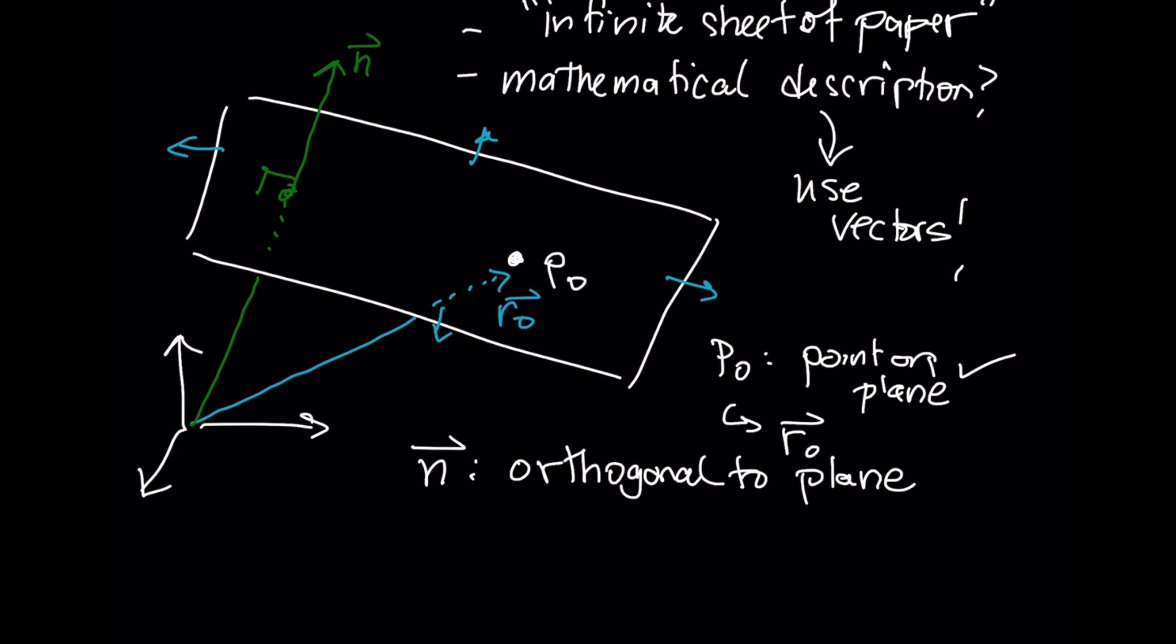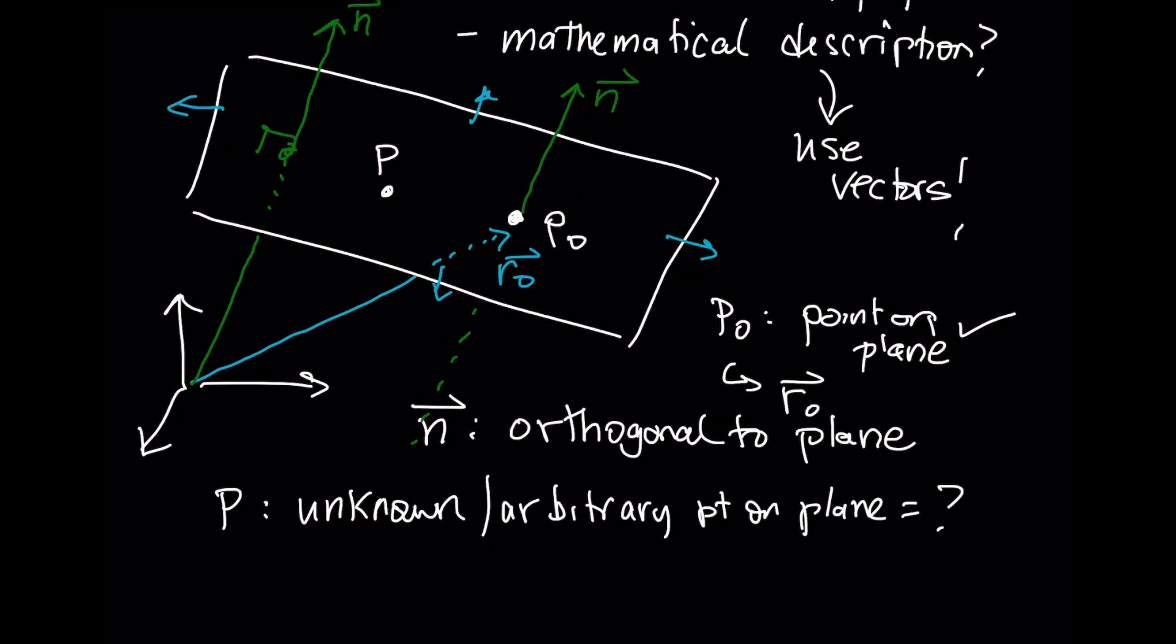I could slide the whole thing over so that it begins at this area like that. P is going to be an unknown or an arbitrary point on the plane. And this is going to have its own position vector. And there's R.